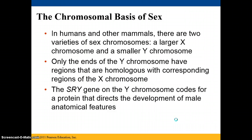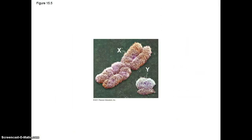There are varieties of sex chromosomes, and in humans there are two that code for sex — a larger X chromosome and a smaller Y chromosome. The ends of the Y chromosome have regions that are homologous with regions of the X chromosome. There is a gene called the SRY gene on the Y chromosome, and that codes for a protein that is going to direct the development of male anatomical features instead of female anatomical features.